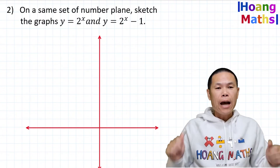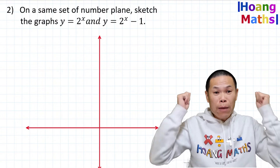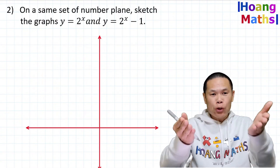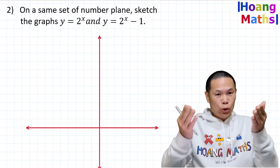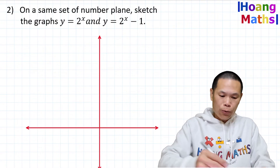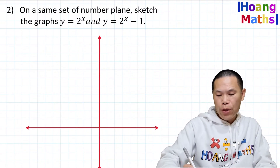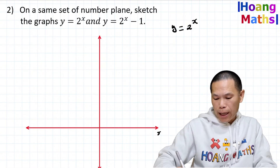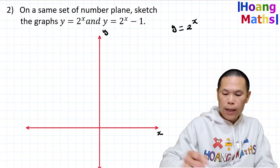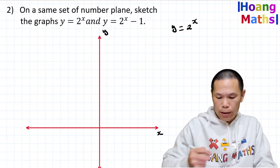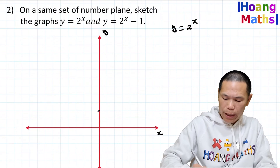Hi, I'm back. Please don't forget to give me a thumbs up and subscribe if you haven't done so — it helps me grow my channel. Let's get into it, starting from y = 2^x. Let me label the x-axis and y-axis. When x = 0, 2^0 = 1, so the point (0, 1) is here.